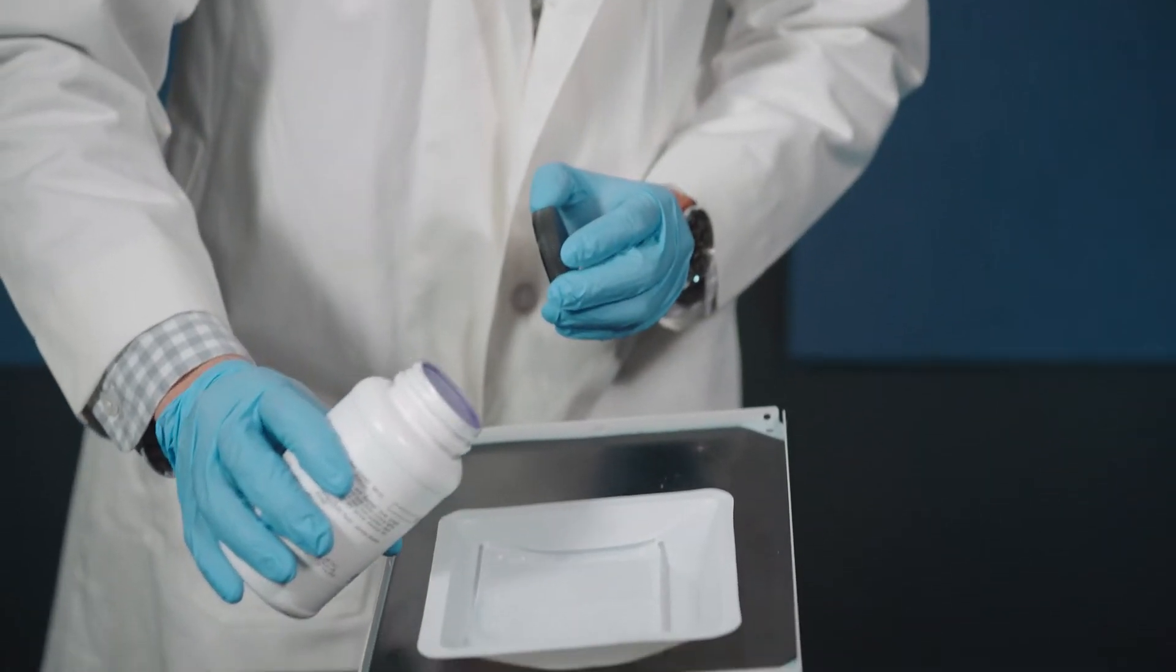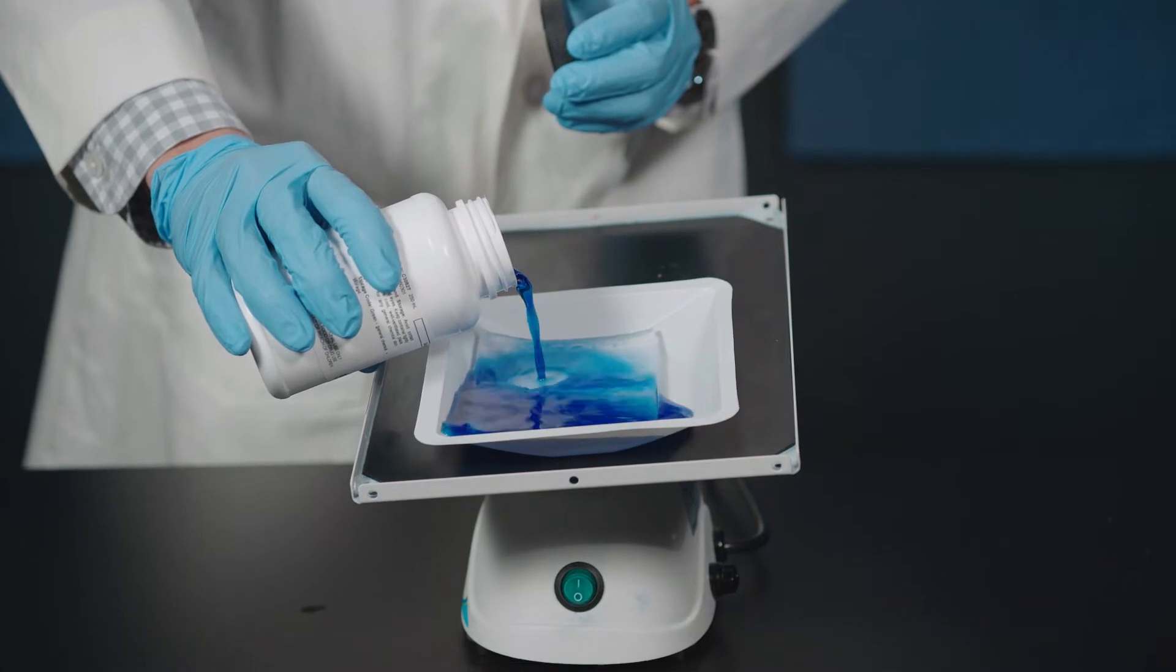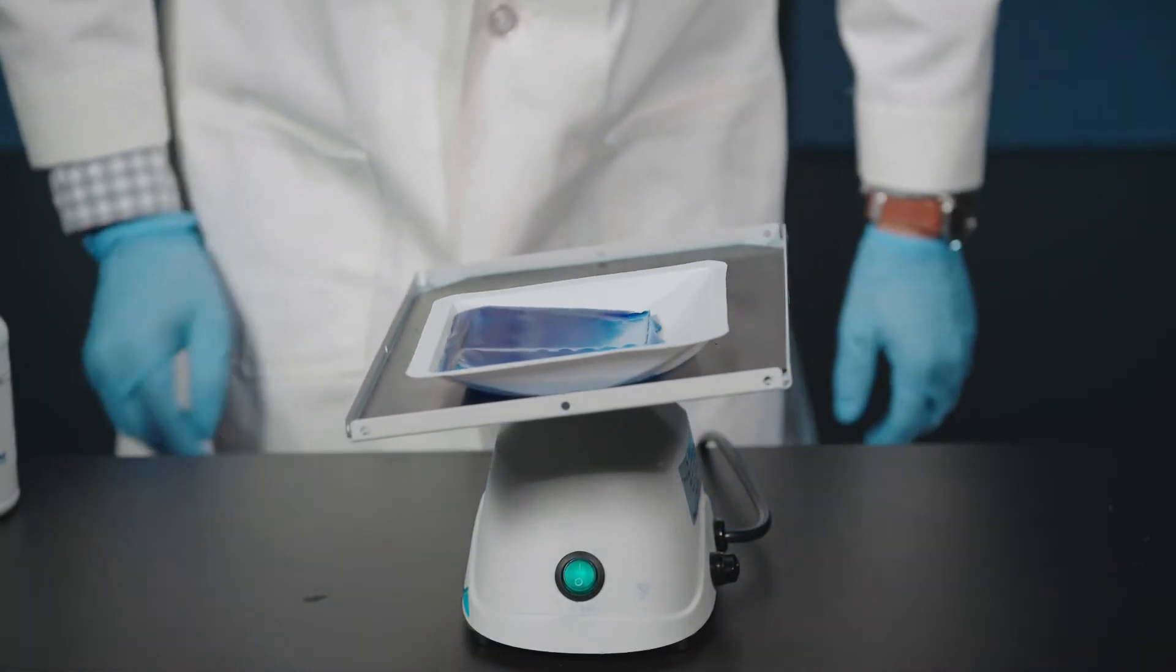Place the tray onto a benchtop rocker and carefully pour the Carolina Blue stain to cover the surface area of the gel. Let sit for 20 to 30 minutes while rocking.